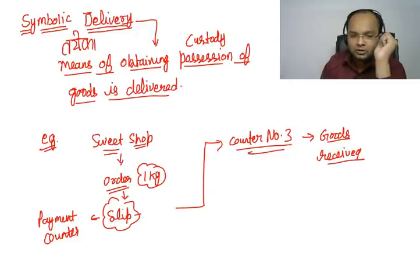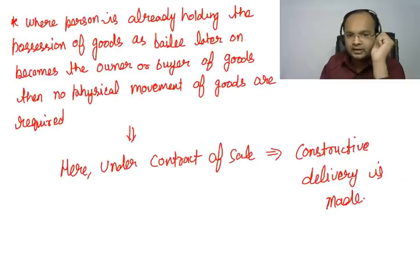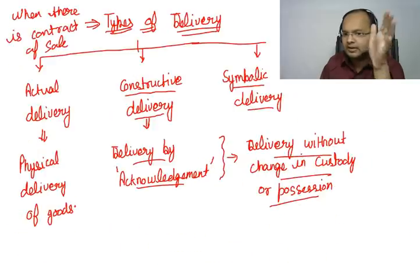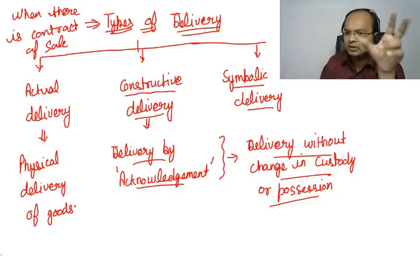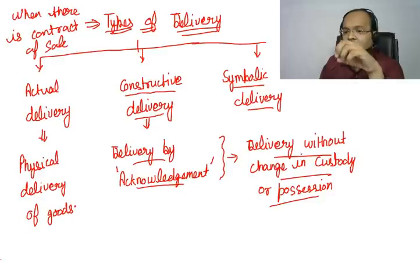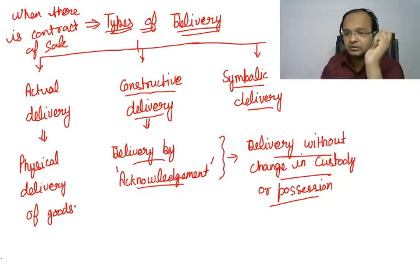So these were basically the types of delivery: actual, constructive, and symbolic. Actual is physical delivery. Constructive is by acknowledgement. And symbolic is by means of obtaining possession — when the means of obtaining possession of goods are delivered.